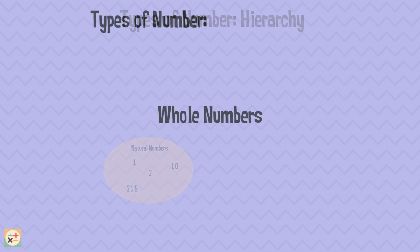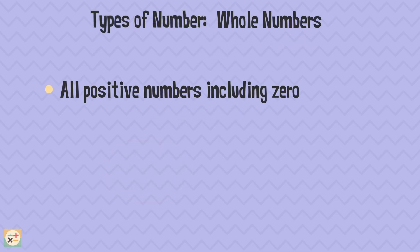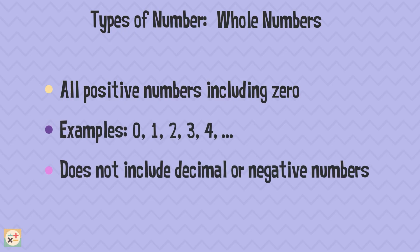That brings us to whole numbers. Whole numbers are positive numbers, including zero, but do not include decimal or negative numbers. Think of whole numbers as natural numbers with zero included.